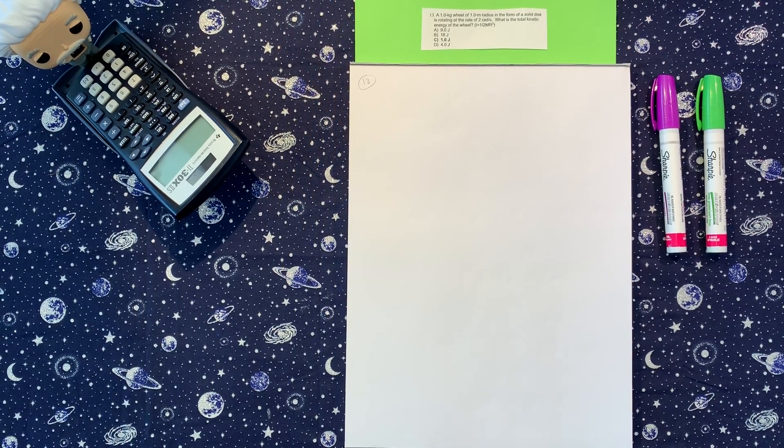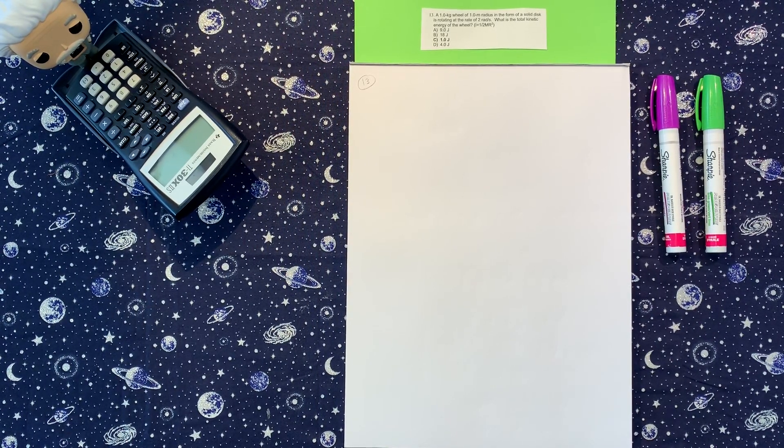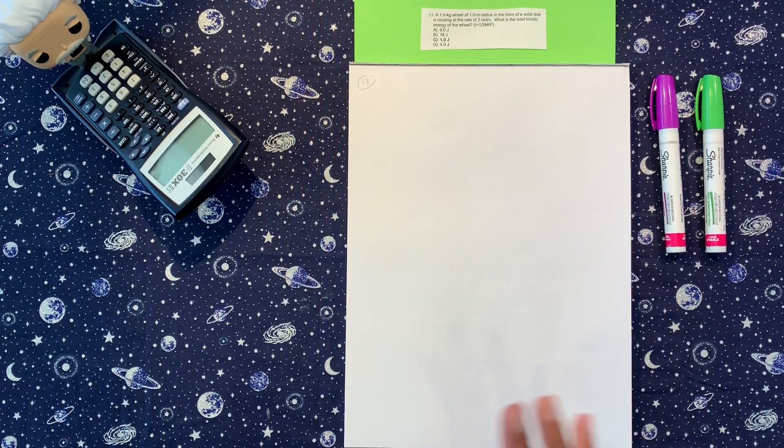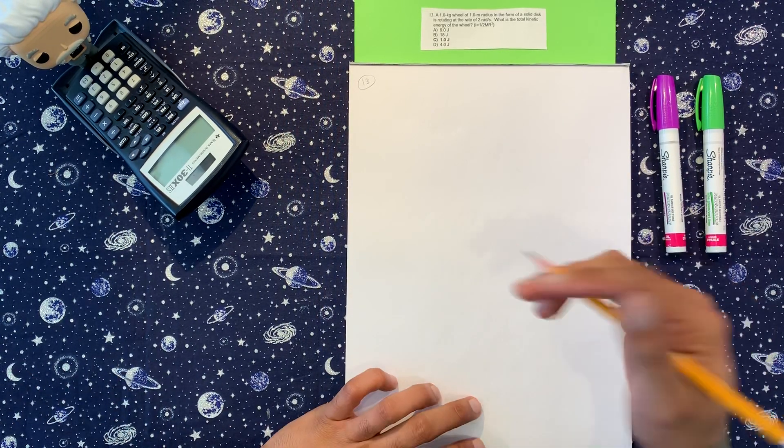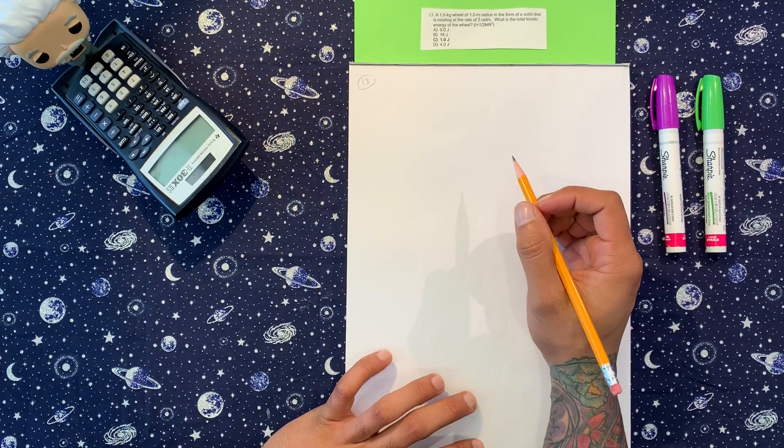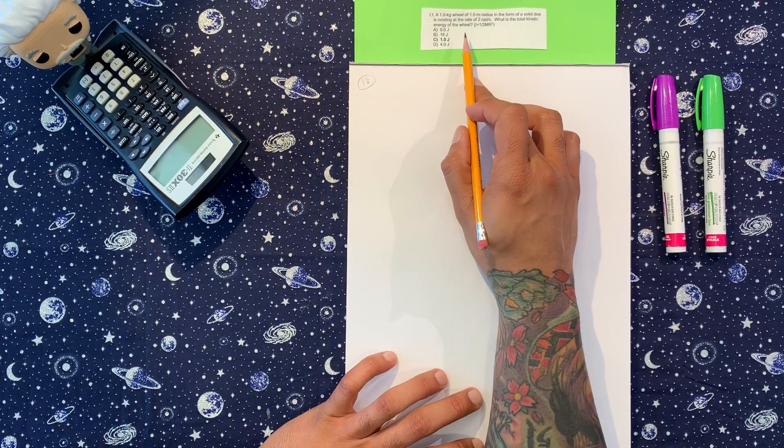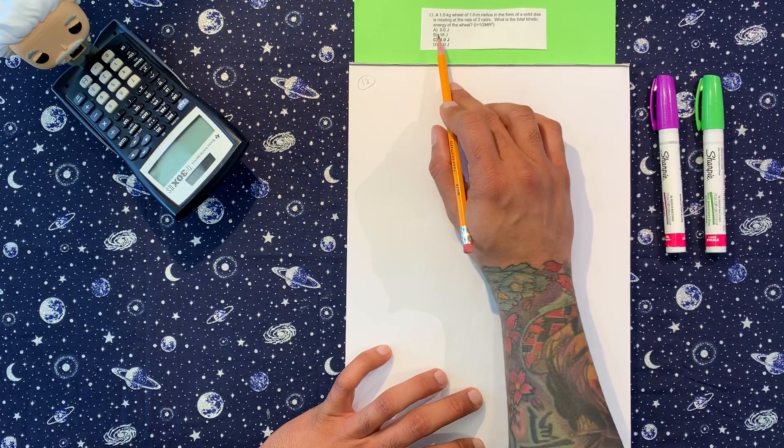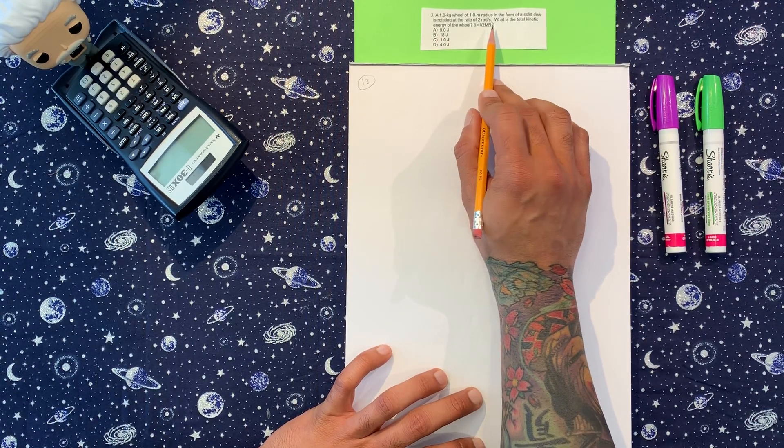Alright, so closing in here, we got number 13, which we can deduce a bunch of things and skip a lot of steps from the previous problems we've done. So we got a one kilogram wheel of one meter radius in the form of a solid disc rotating at a rate of two radians per second.